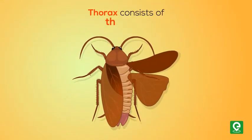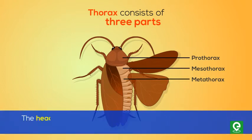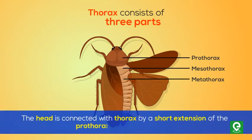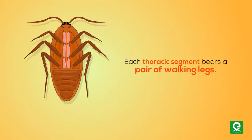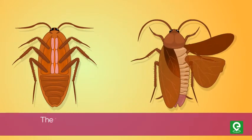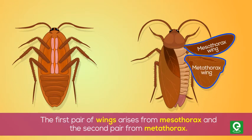The thorax consists of three parts: prothorax, mesothorax, and metathorax. The head is connected with the thorax by a short extension of the prothorax known as the neck. Each thoracic segment bears a pair of walking legs. The first pair of wings arises from the mesothorax and the second pair from the metathorax.